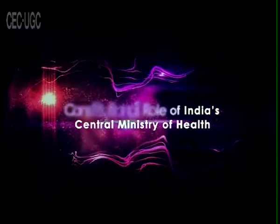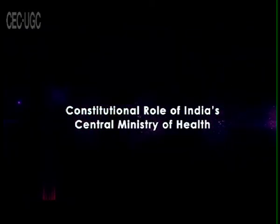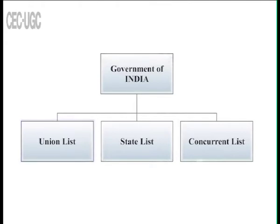Now we have the Constitutional Role of India's Central Ministry of Health. There are three lists in the Constitution of India. The lists are services or items to be catered to the citizens. The three lists are the union list, the state list, and the concurrent list. Only the central government is responsible and empowered to pass legislation and make laws on the union list. In the case of the state list, only the state governments are empowered to make laws. Both the central and state governments share responsibility for making laws in the case of the concurrent list.